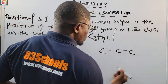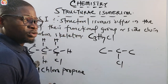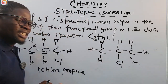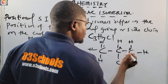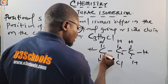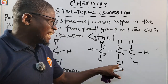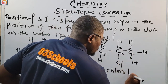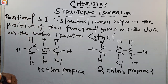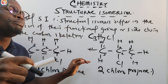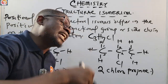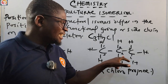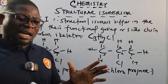We can also have another structure where the chloride side chain moves to the middle — to the second carbon atom. This becomes 2-chloropropane. These two are positional isomers: the side chain is on the first carbon in one case, and on the second carbon in the other.